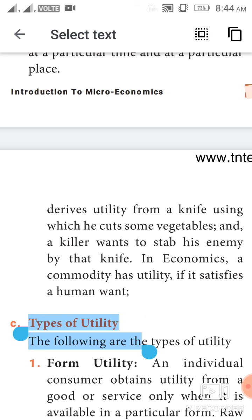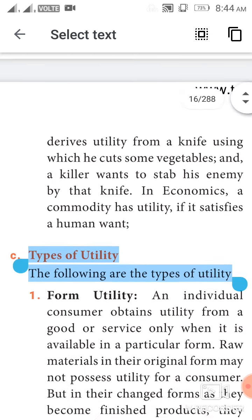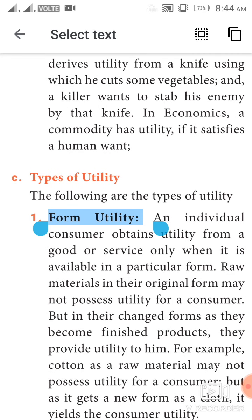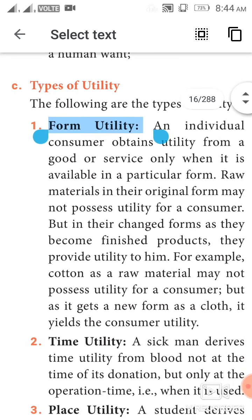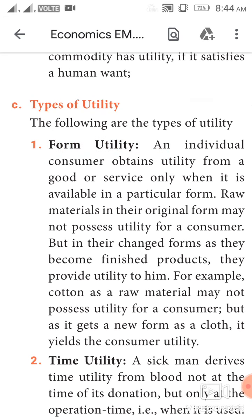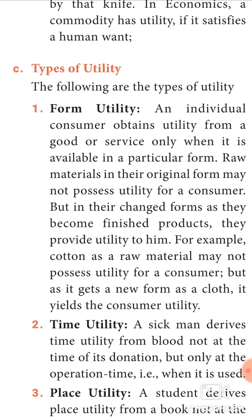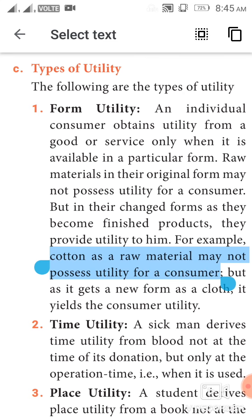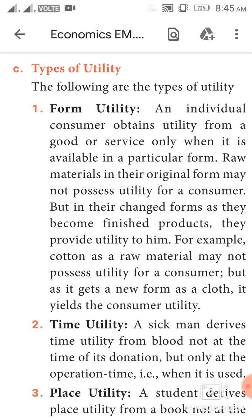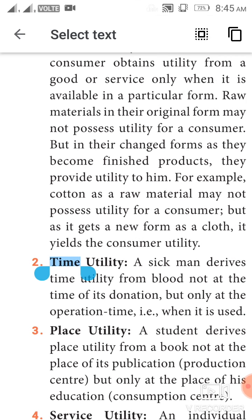Types of utility. Form utility: an individual consumer obtains utility from a good or service only when it is available in a particular form. Raw materials in their original form may not possess utility for a consumer, but in their changed forms, as they become finished products, they provide utility. For example, cotton as a raw material may not possess utility, but when it gets a new form as cloth, it yields utility to the consumer.